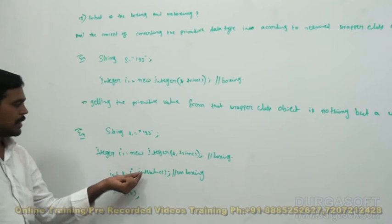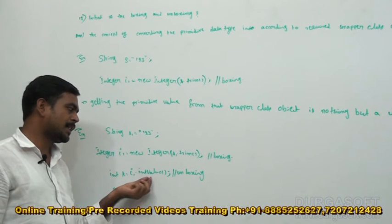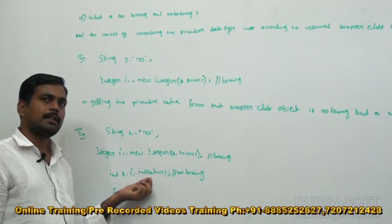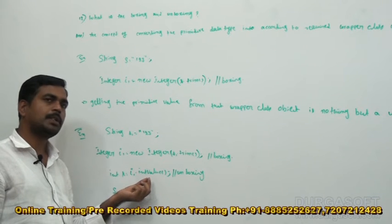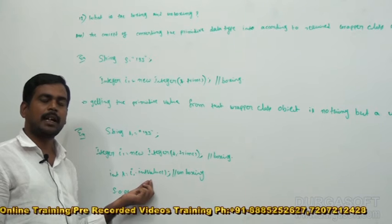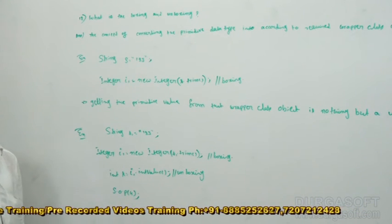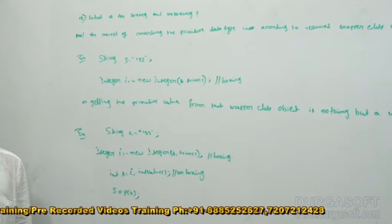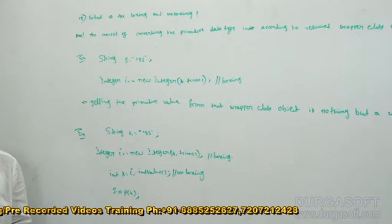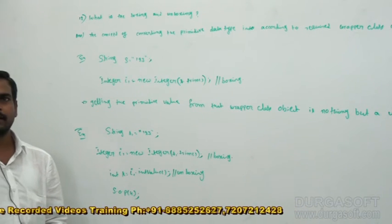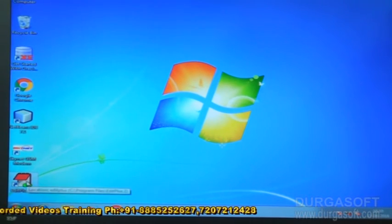This intValue() is one of the methods given by the wrapper class, also called a utility method. In wrapper class, some utility methods are available such as intValue(), toString(), parseInt(), and others. Using these utility methods, we can get the required primitive types or convert primitives to wrapper types based on requirement. Now I am going to take one practical example — we will see it practically.